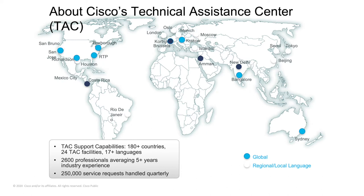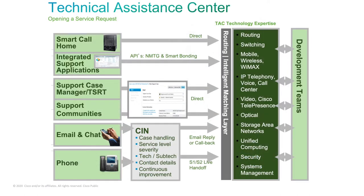Cisco TAC consists of over 2,600 IT professionals spanning 24 facilities across the globe, and they follow the sun so that you always have the appropriate support whenever you need it. There are a myriad of options to engage TAC based on severity. Many of our solutions today have smart call-home features that find issues and proactively engage TAC on your behalf.